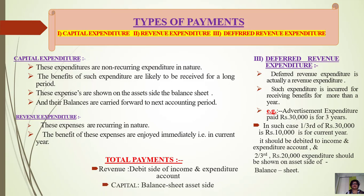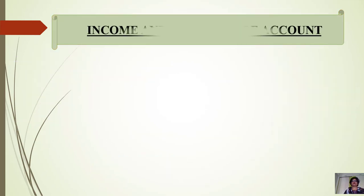Capital payments go on the balance sheet asset side. Deferred revenue expenditure is actually revenue expenditure, but this expenditure gives benefit for more than one year. For example, advertisement expenditure paid Rs. 30,000 for three years — one-third goes to income and expenditure account for the current year, and two-thirds are shown on the asset side of the balance sheet as prepaid expenses. In the next video I will teach you the next point — income and expenditure account.